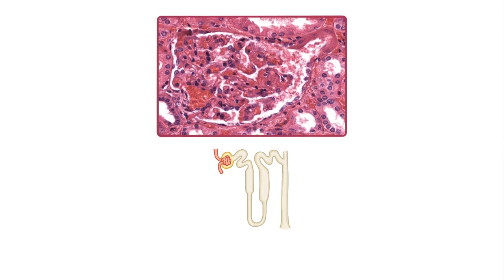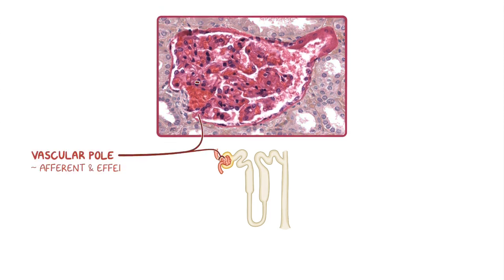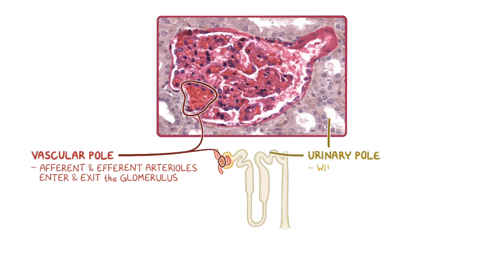In some images of the renal corpuscle, you'll also be able to see the vascular pole, which is where the afferent and efferent arterioles enter and exit the glomerulus in order to supply and drain the glomerular capillaries. The urinary pole is where the ultrafiltrate is drained from the capsular space into the next part of the nephron, the proximal convoluted tubule.